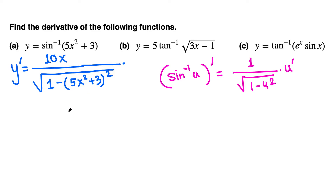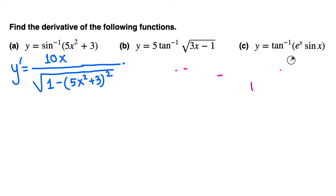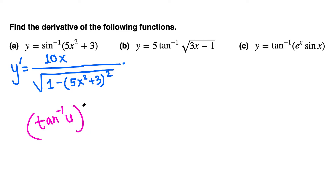Do not cancel or simplify anything. Let's move to the next question. In parts b and c we have tangent inverse. We know the formula: the derivative of tangent inverse of u is 1 over (1 plus u squared), and since this is a function of x we multiply by u prime from the chain rule.